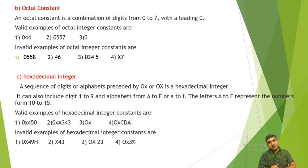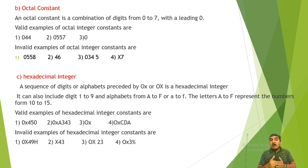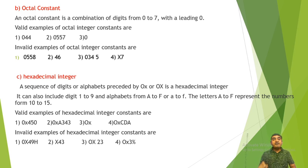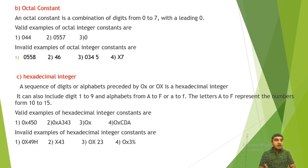Now we have to see hexadecimal integer constants. A hexadecimal integer is a sequence of digits or alphabets preceded by 0x (capital O, small x, or capital X). It can include digits 0 to 9 and alphabets A to F (or a to f). The letters A to F represent numbers 10 to 15, since hexadecimal is base 16: 0,1,2,3,4,5,6,7,8,9, then A=10, B=11, C=12, D=13, E=14, F=15.